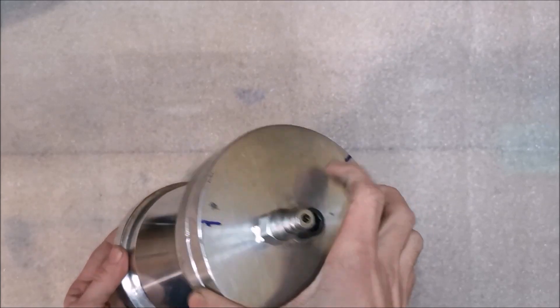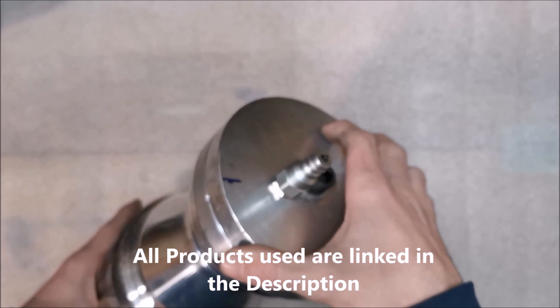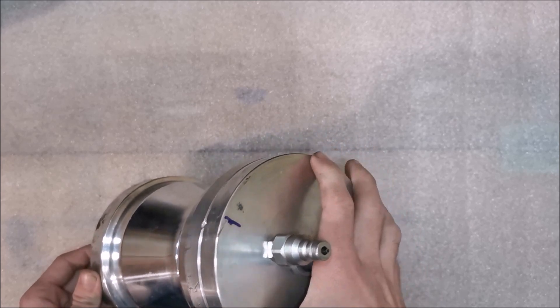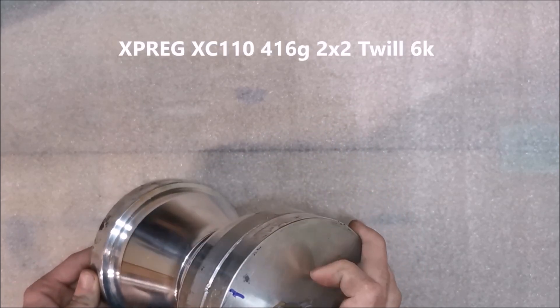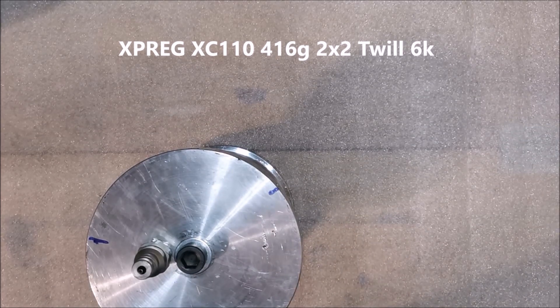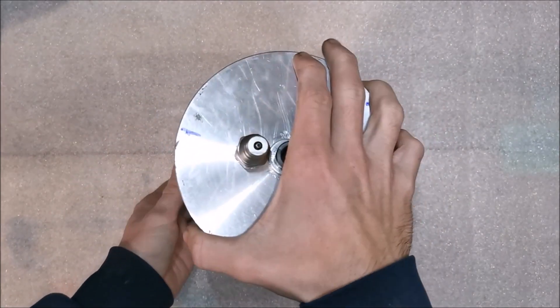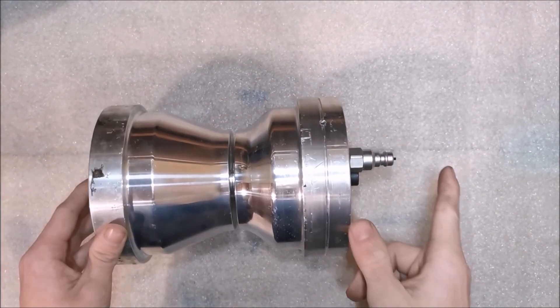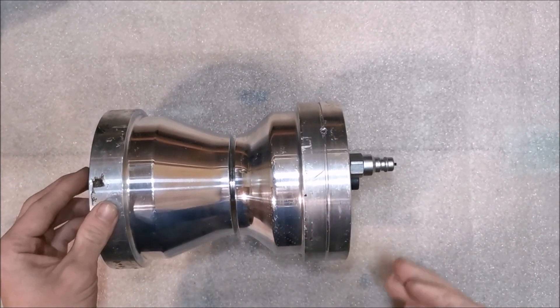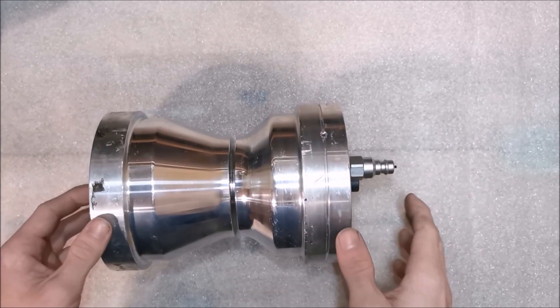On the top we have here a connector for the vacuum hose. This is from Easy Composites. Same as my prepreg that I use. I use the XC 110 410 grams 2x2 twill. And you might wonder how I get the air from here to inside the mold to pump the air out basically.